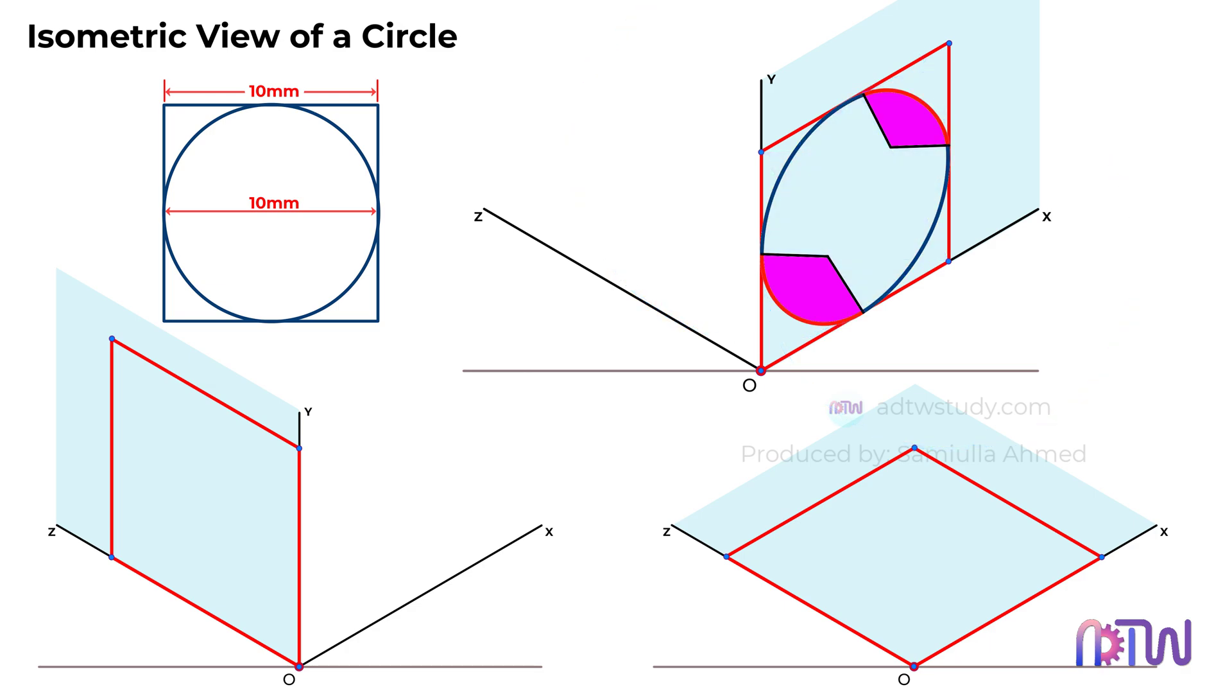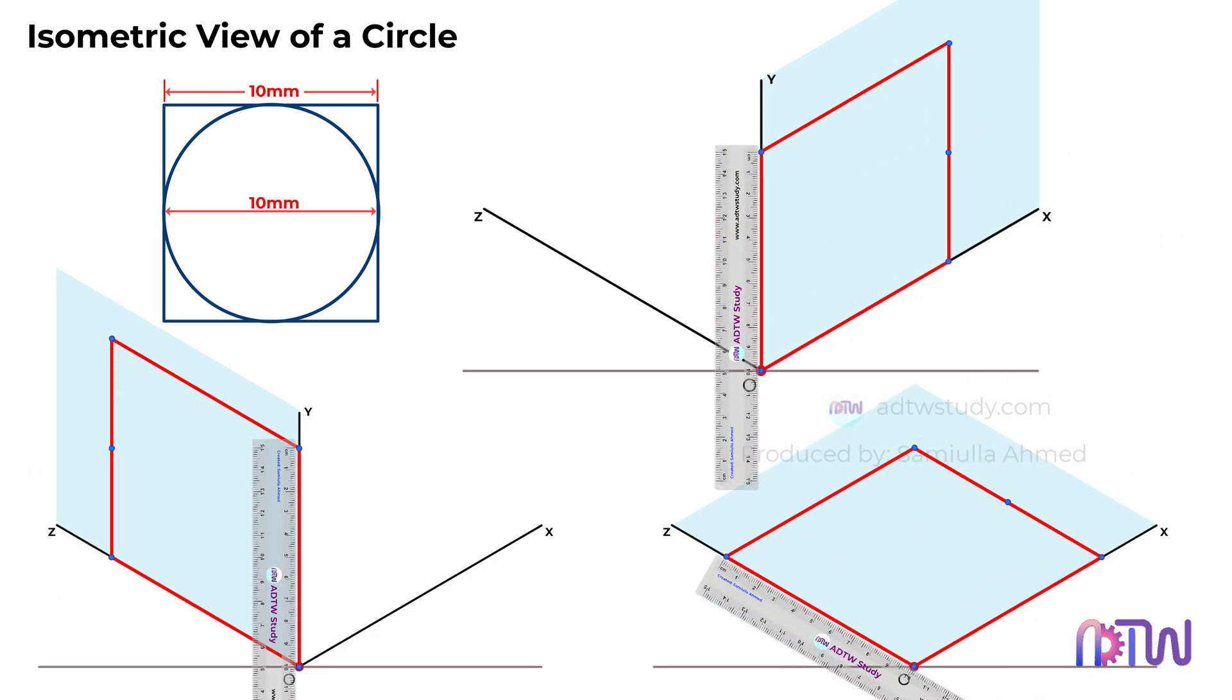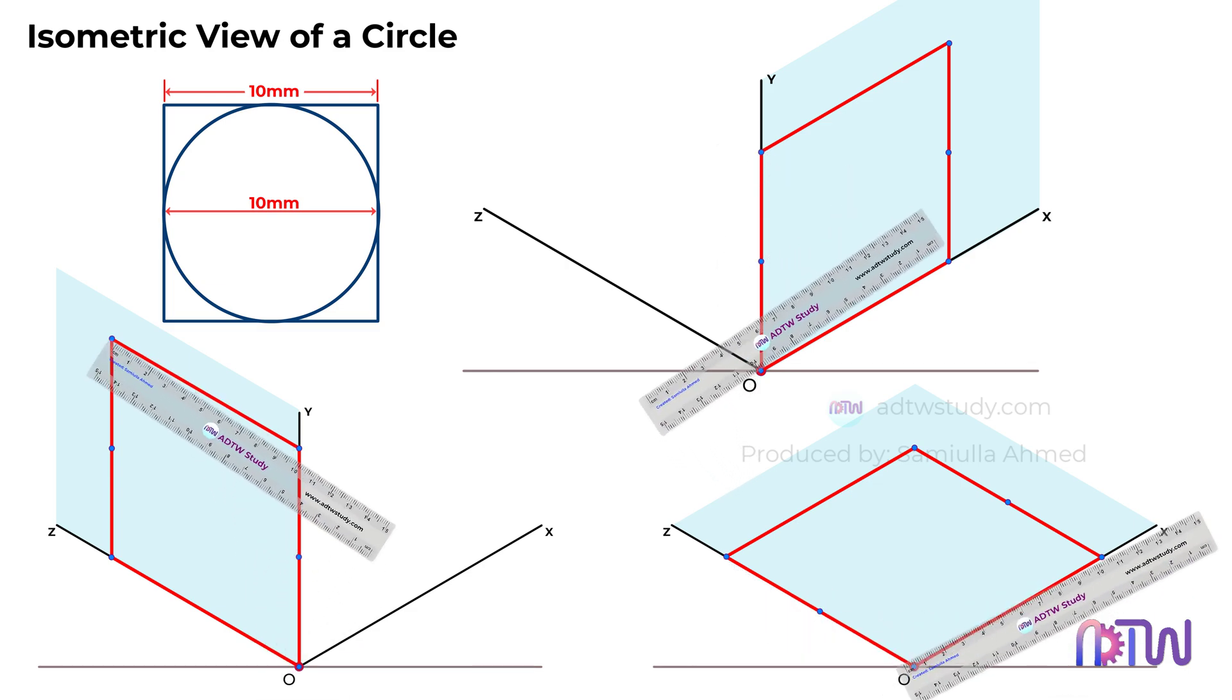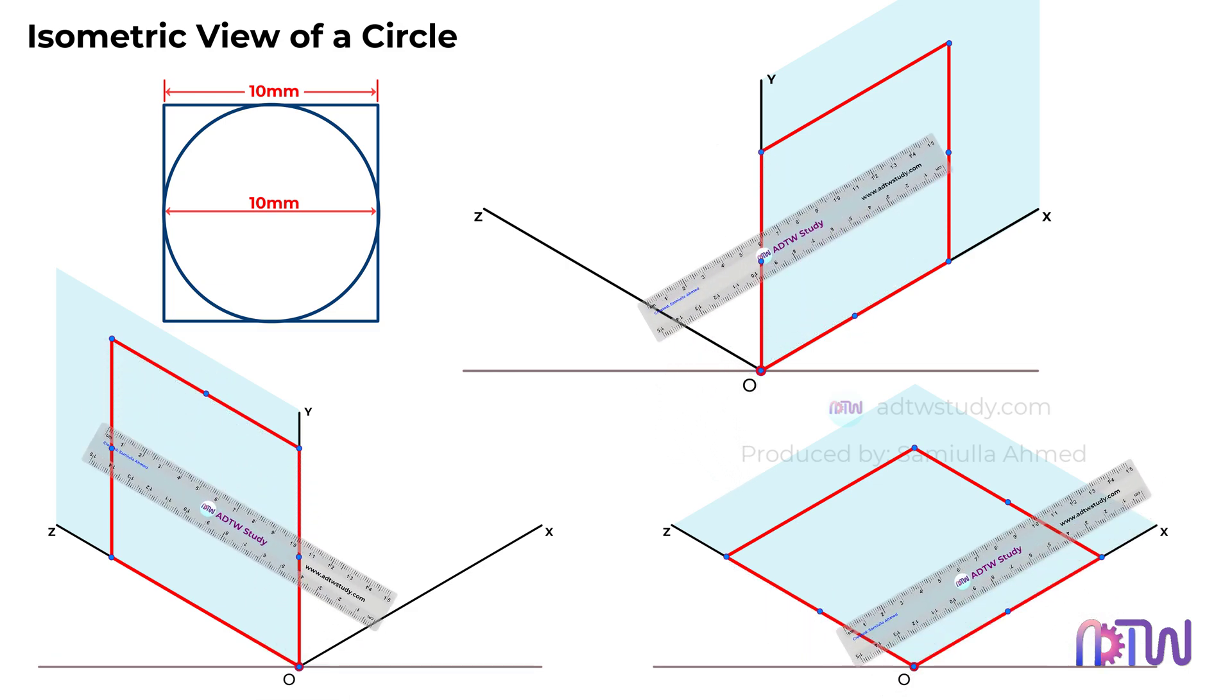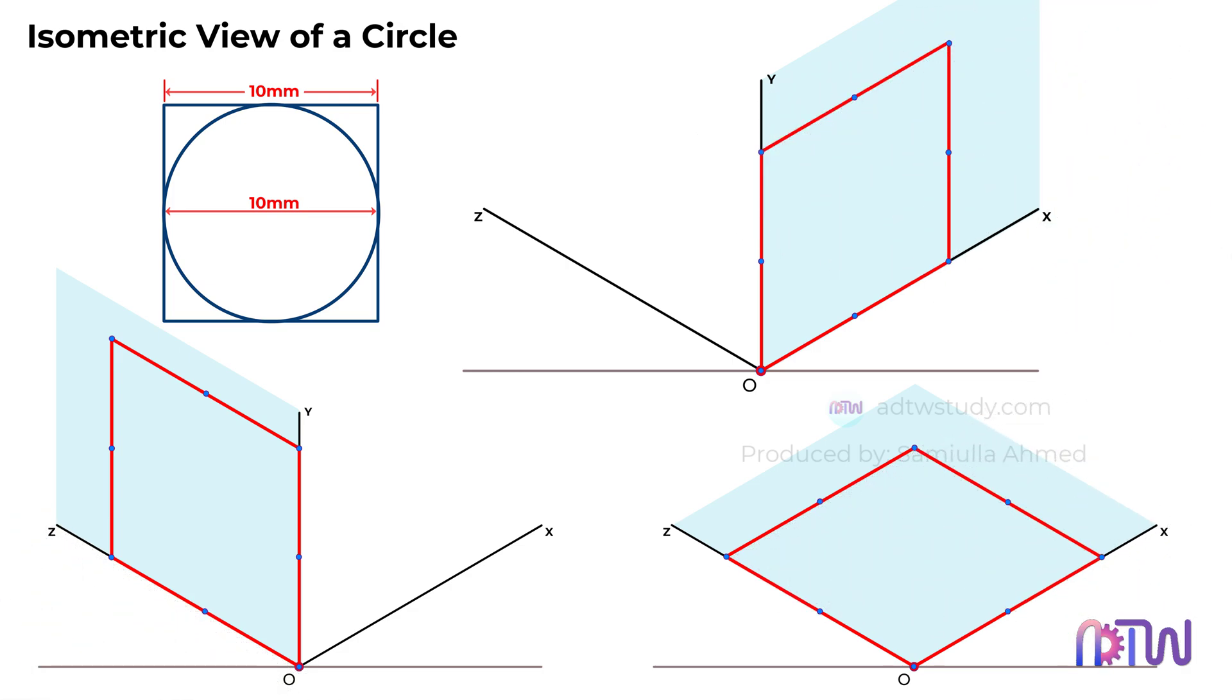To draw the arcs of these 4 quarters, we need to find the center points for these arcs. That can be done like this. Bisect all 4 sides of the square, and then join the diagonals for the square by connecting the opposite corner points of the square.